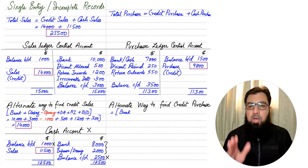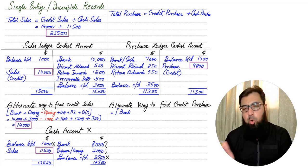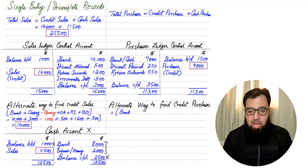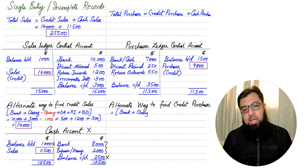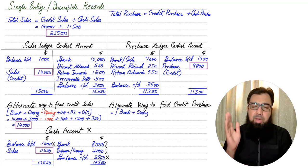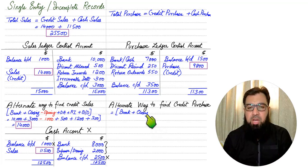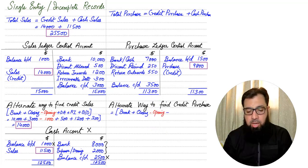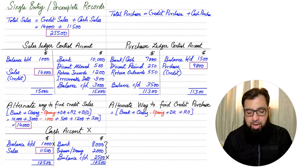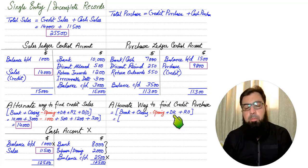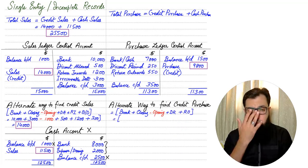The bank figure represents payment to suppliers. Whenever accrued, outstanding, or unpaid amounts appear at the end of the year, they are always added — whether it is an accrued expense, accrued income, accrued for receivable, or accrual for payable. If the closing accrued is added, then the opening accrued is deducted. Discount Received and Return Outward are also added.